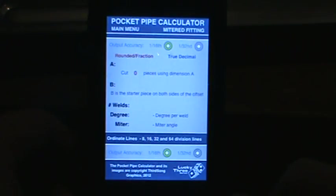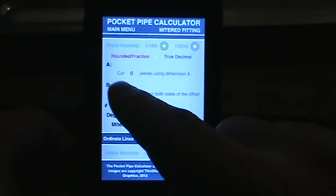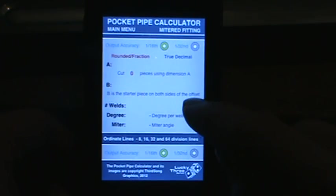Your output, you're going to have value A. It'll also tell you how many pieces to cut at value A. Then you have your value B which is your starter piece and the end piece.